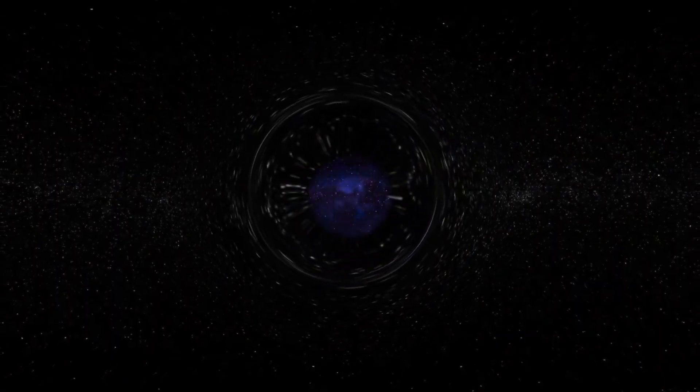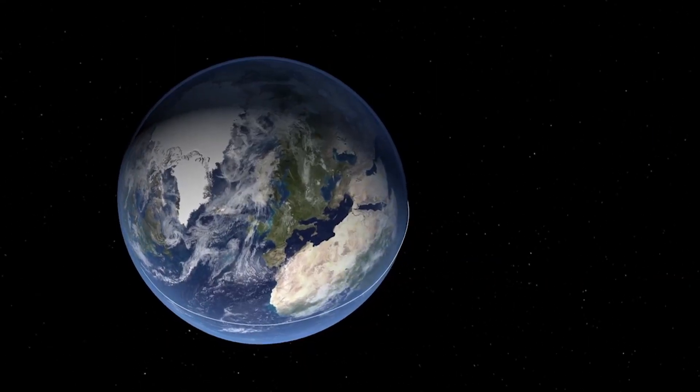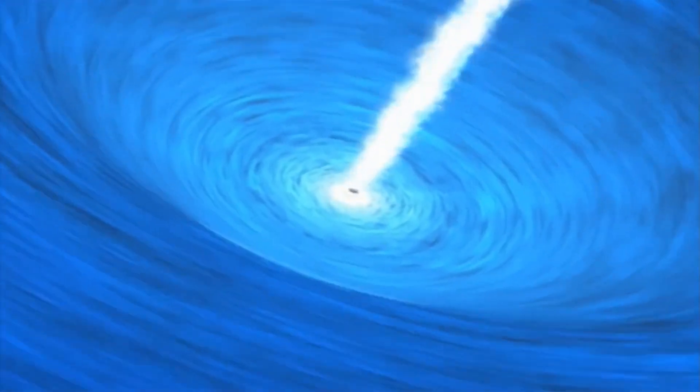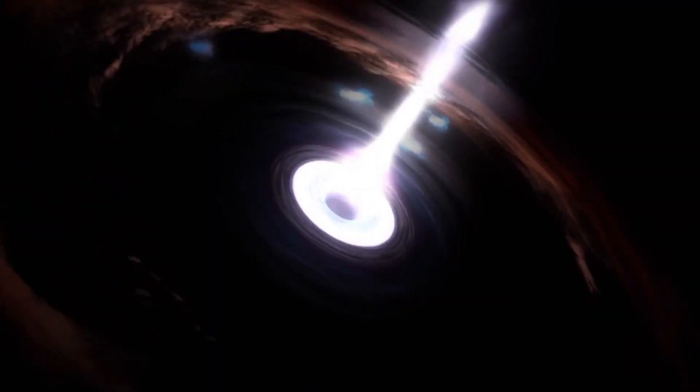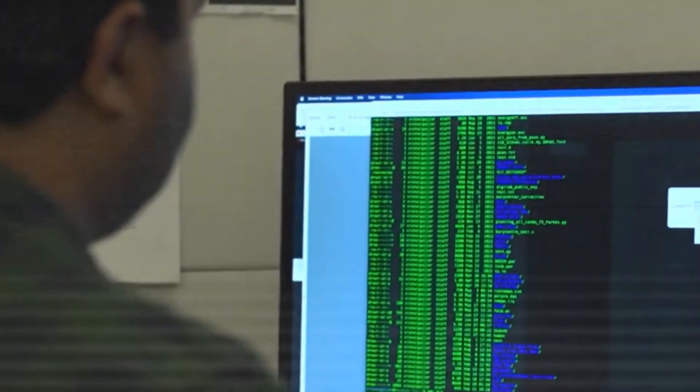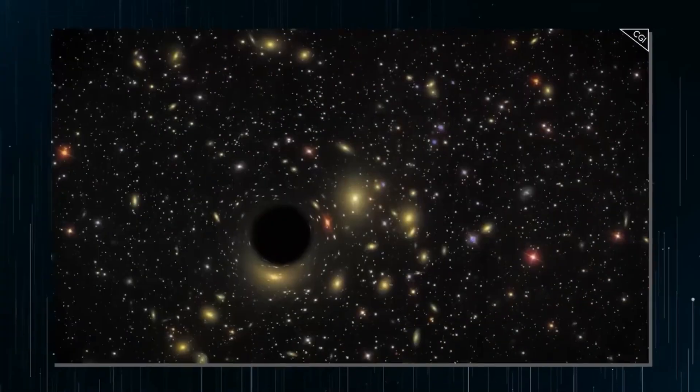Gravitational lensing has also been instrumental in the discovery and study of exoplanets, planets that orbit stars outside our solar system. In some cases, the lensing effect can magnify the light from a distant star, revealing the presence of an orbiting exoplanet that would otherwise be too faint to detect. This technique, known as microlensing, has led to the discovery of numerous exoplanets, many of which are located in regions of space that are difficult to study using other methods.